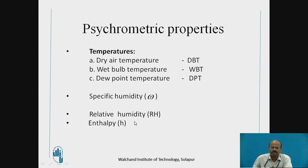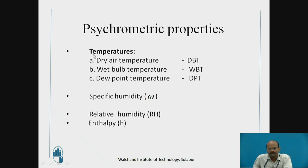Now, the psychrometric properties include temperature, specific humidity, relative humidity, and enthalpy. We will see these properties step by step in detail.